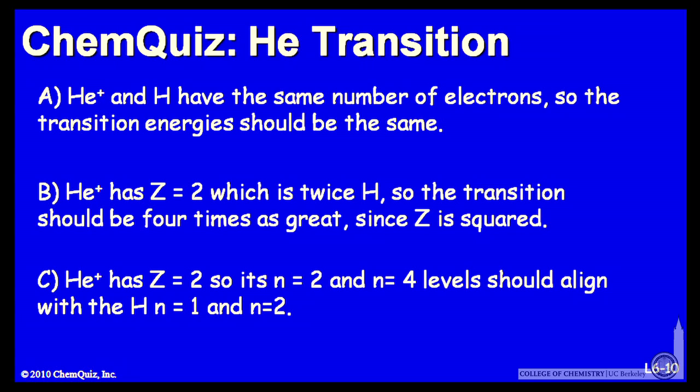Let's consider some arguments for each of the possible answers. A: He plus and hydrogen have the same number of electrons, so the transition energy should be the same. Or B: He plus has Z equal 2, which is twice H, so the transition should be 4 times as great, since Z is squared.